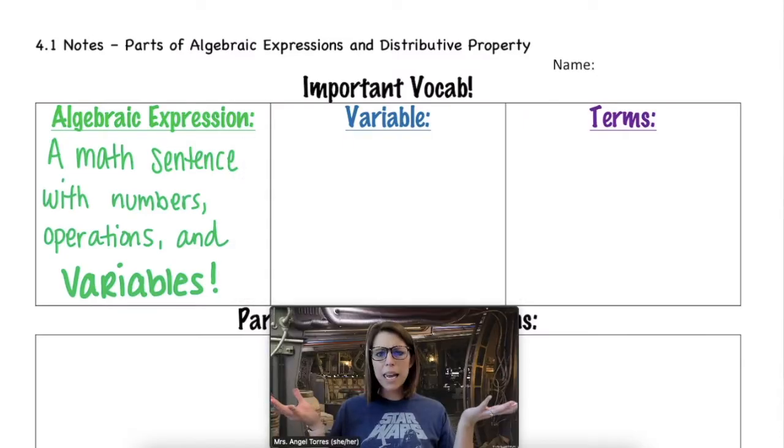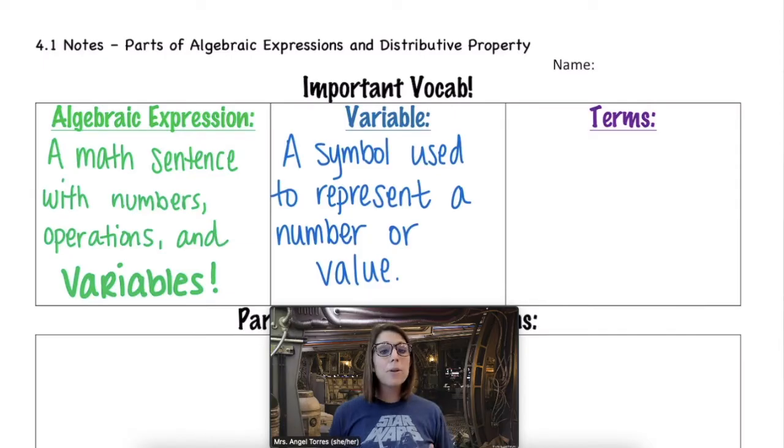What's a variable you might ask? Great question. A variable is a symbol that's used to represent a number or value. Now most commonly you're going to see the symbols x and y, but later on in math you actually get into Greek symbols like theta to represent unknown values.